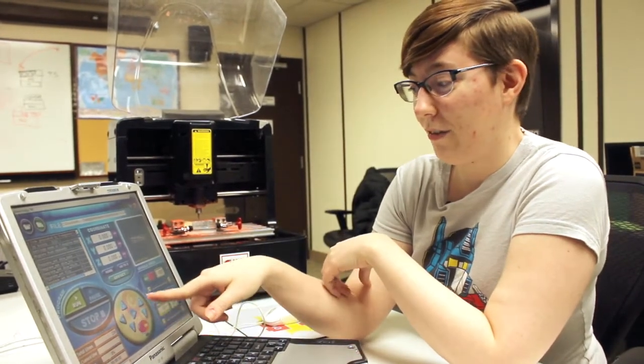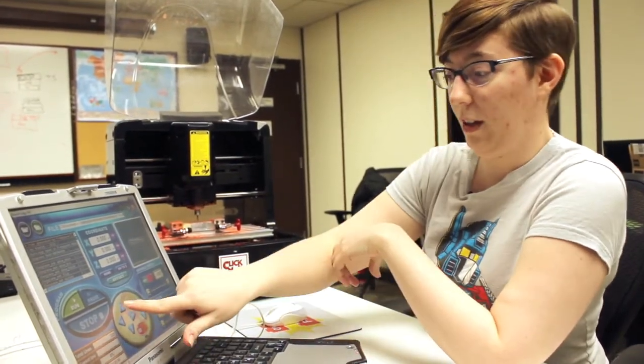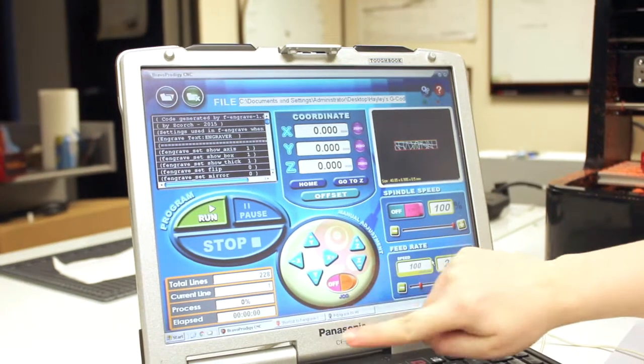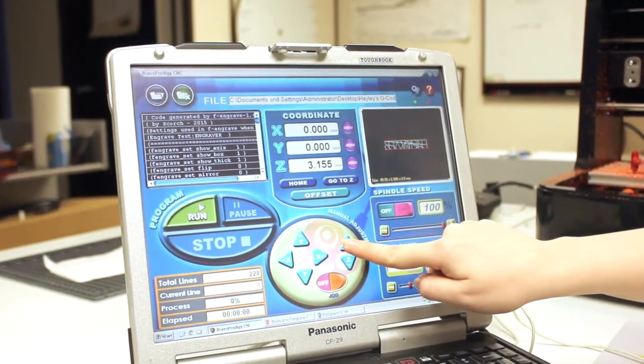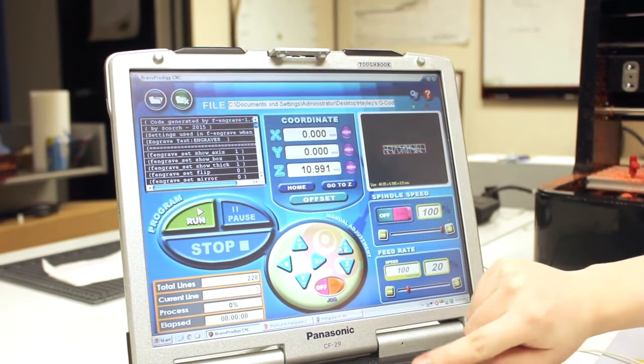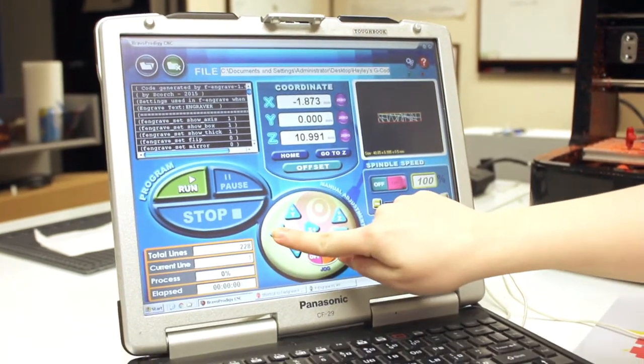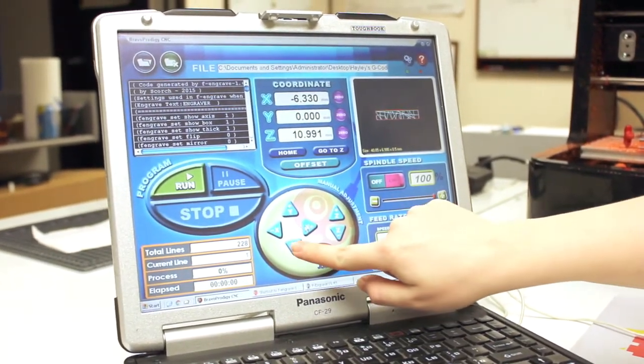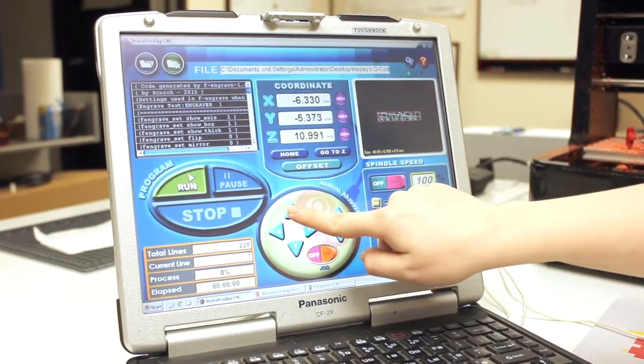We've got different controls all around. You can see here, I can move my Z-axis, which is up and down. I can move my X-axis, which is left and right. And I can move my Y-axis, which is forward and back.